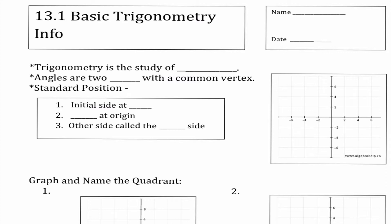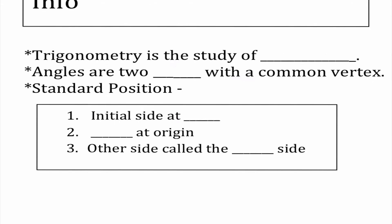Today we're going to learn some basic skills — basic trig info. If you're struggling on something today, definitely make sure you're coming in and getting help, because I want to make sure you're understanding what to do before we build upon this. We do have a note handout today, which is available on the website. Trigonometry is actually the study of angles. Angles are two rays that have a common vertex. The first concept we're going to be talking about today is how we actually graph and put these angles in standard position.